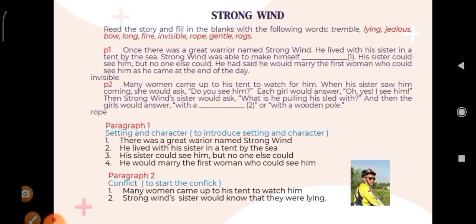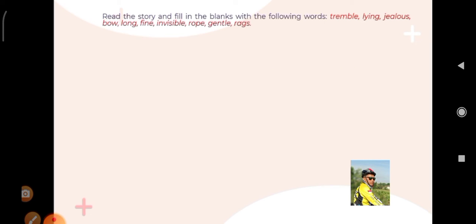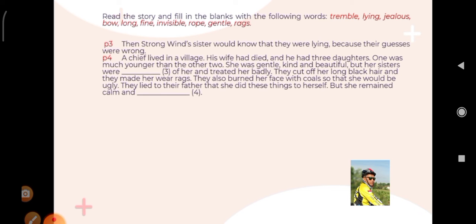And then 'Strong Wind's sister would know that they were lying.' Nah, kakak dari Strong Wind ini mengetahui kalau women yang datang itu lying — berbohong. Okay, next. Paragraph 3: Strong Wind's sister would know that they were lying because their guesses were wrong — tembakannya keliru.